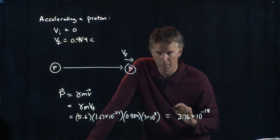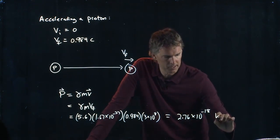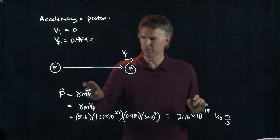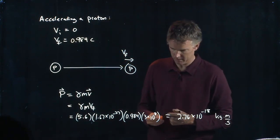What are the units of momentum? Remember, it's kilogram meters per second, right? Gamma is unitless. Mass is kilograms. V is, of course, meters per second.